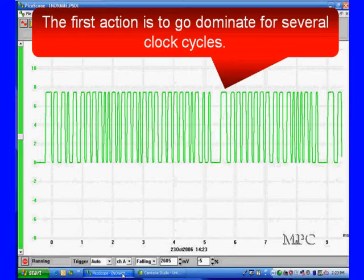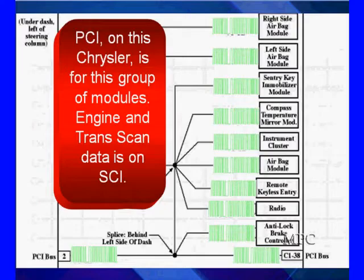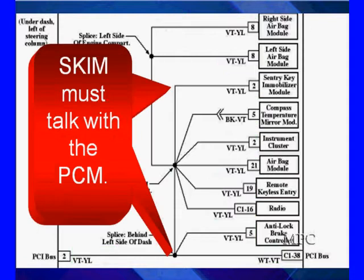Now once a module wants to talk, its first action is to go dominant. In that particular case, we're going to go up to seven, seven and a half volts. When we go high, that tells all other modules to be quiet and to listen. Right here, we have the same signal on all of these. This group of modules for the engine transmissions, it's all on one.